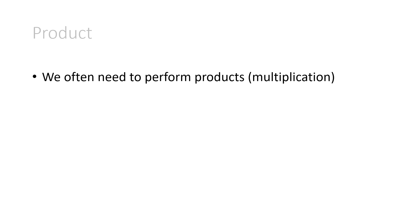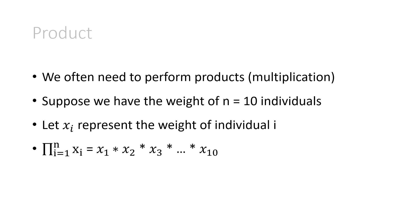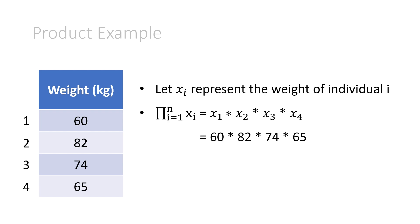This notation on the left-hand side of the equals sign is used all over the place in mathematics — it's a nice short form for a sum. Now something very similar that comes up a little less often, but still fairly often, is the product. It's the same thing, but multiplying many things together. We often need to perform products, or just multiplication. Suppose we have the weight of n equals 10 individuals. Let xi represent the weight of individual i. This new notation reads as the product as i goes from 1 to n of xi, which is x1 times x2 times x3 all the way up until xn — and since n is 10, it's times x10. This is simply the multiplication of all of the weights together. Let's look at a product example. We have our four weights. We let xi represent the weight of individual i, and so the product as i goes from 1 to n of xi is x1 times x2 times x3 times x4, which is 60 times 82 times 74 times 65, and that mathematically is 23,665,200. I totally worked that out in my head.